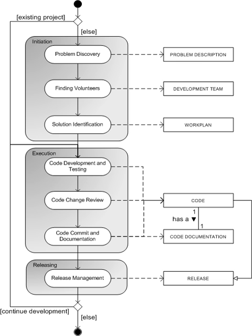It is hard to run an open-source project following a more traditional software development method like the waterfall model, because in these traditional methods it is not allowed to go back to a previous phase. In open-source software development, requirements are rarely gathered before the start of the project; instead they are based on early releases of the software product. Besides requirements, volunteer staff is often attracted to help develop the software product based on those early releases.